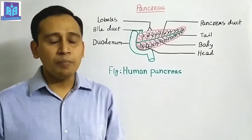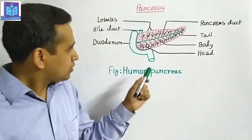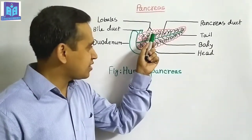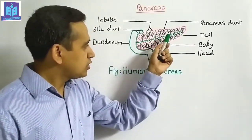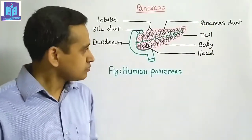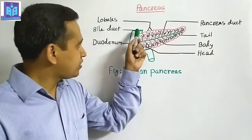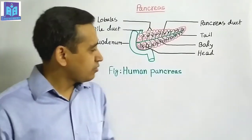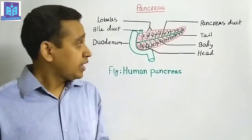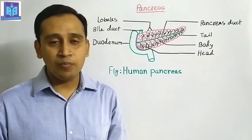The gland with a duct is called exocrine gland and its secretions are called enzymes. The gland which is ductless is called endocrine gland and its secretions are called hormones. Since pancreas consists of both exocrine and endocrine glands, it is called a mixed gland. From every lobule of pancreas, a small duct is originated, and together all the small ducts form a main duct called the pancreatic duct. This pancreatic duct opens into the duodenum through the ampulla of Vater with the bile duct. The endocrine glands are scattered between the lobules as clusters of cells called islets of Langerhans.